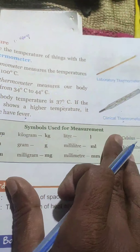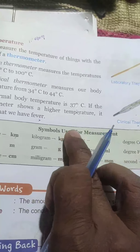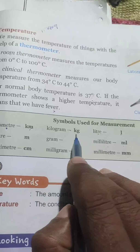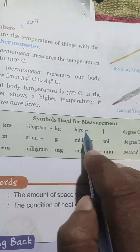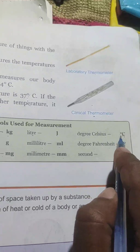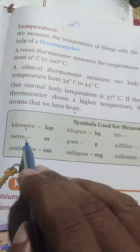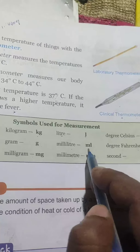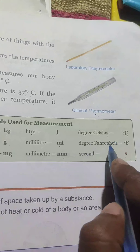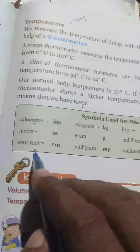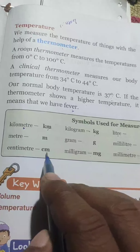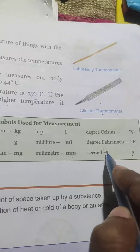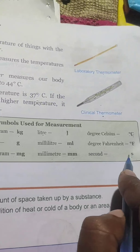यह symbols हैं जो measurement के लिए यूज किये जाते हैं: km, kg, liter L, degree Celsius °C, meter m, gram g, mm, degree Fahrenheit °F, mg, mm, and second S.